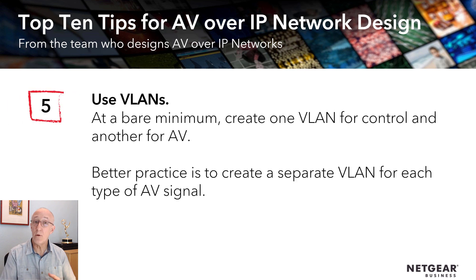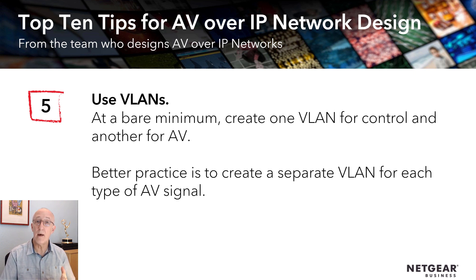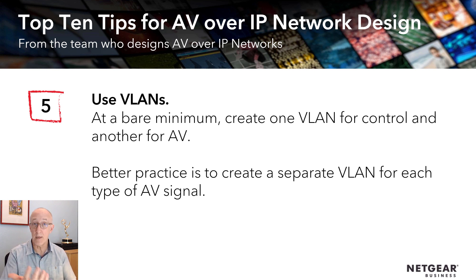Number five: use VLANs. At a bare minimum, create one virtual local area network, or VLAN, for control and another for AV. The better practice is to create a separate VLAN for each type of AV signal — so you'd have one for Dante audio, for example, and a separate one for your other types of video signals.